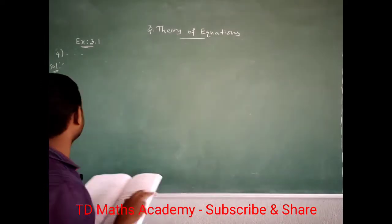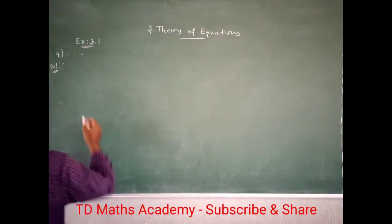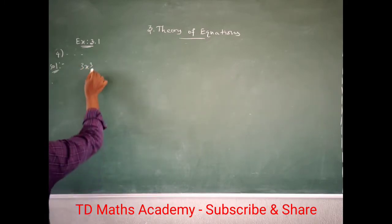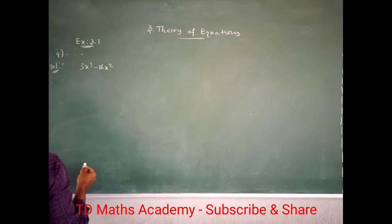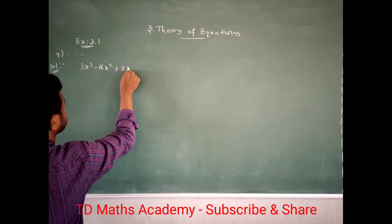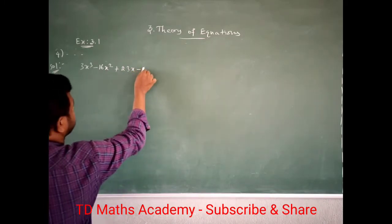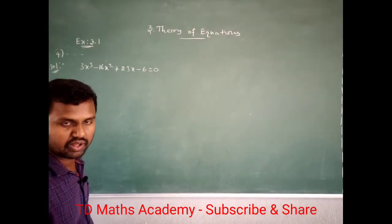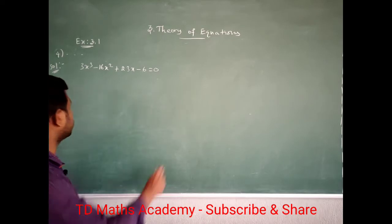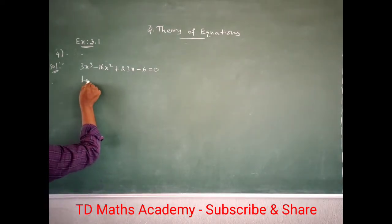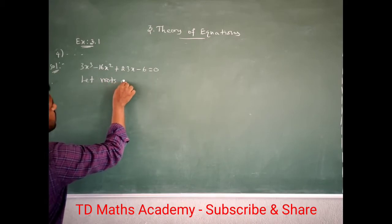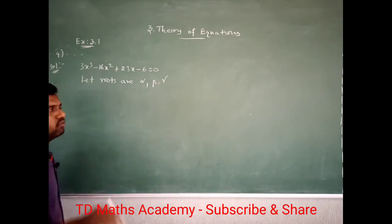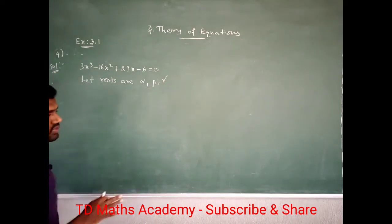So first, I am writing that equation: 3x³ minus 16x² plus 23x minus 6 equal to 0. To solve this equation, you have to find out alpha, beta, gamma values. So let the roots be alpha, beta, gamma — you have to find out all three values.